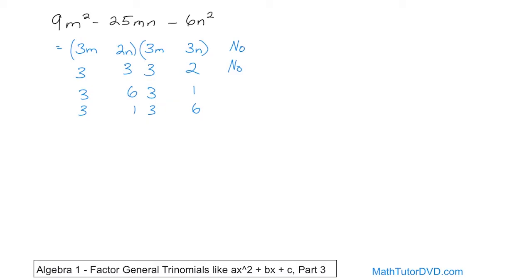So what else times what else gives me 9? Well, 9 times 1 gives me 9. So I put a 9 here times 1 here. And then I'm going to go back to 6 and try 2 times 3. I have 2 times 1 is 2, and 9 times 3 is 27. So here's 27 and here's 2. If I subtract them, I actually get 25. So I think I may have stumbled upon the right answer.